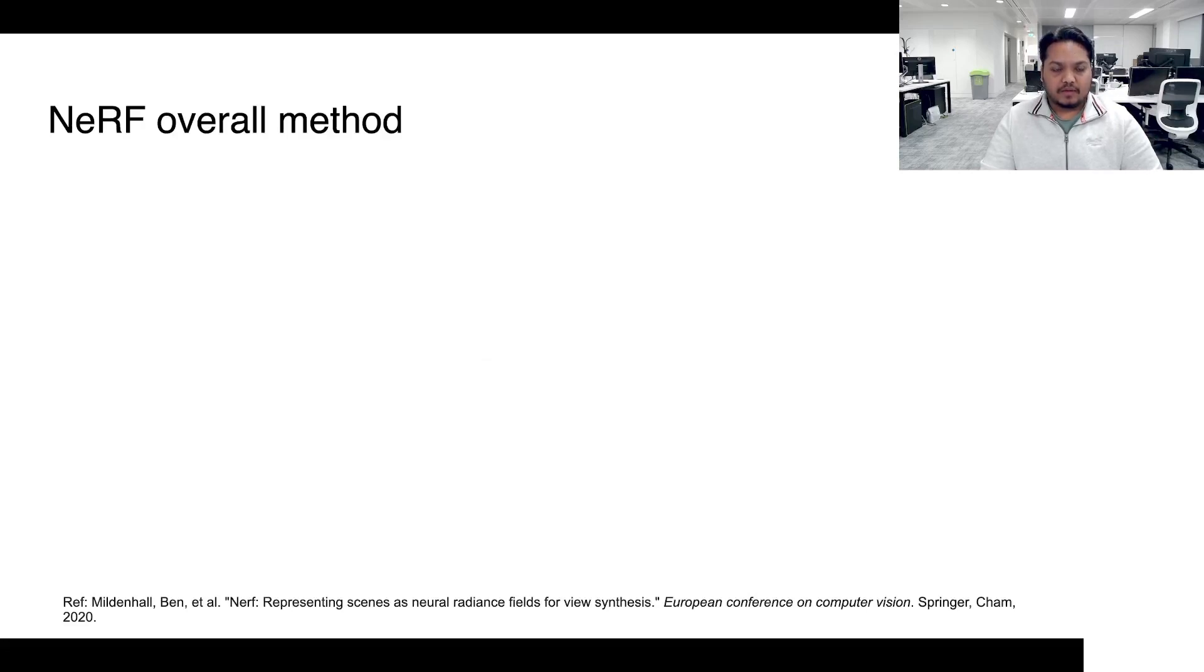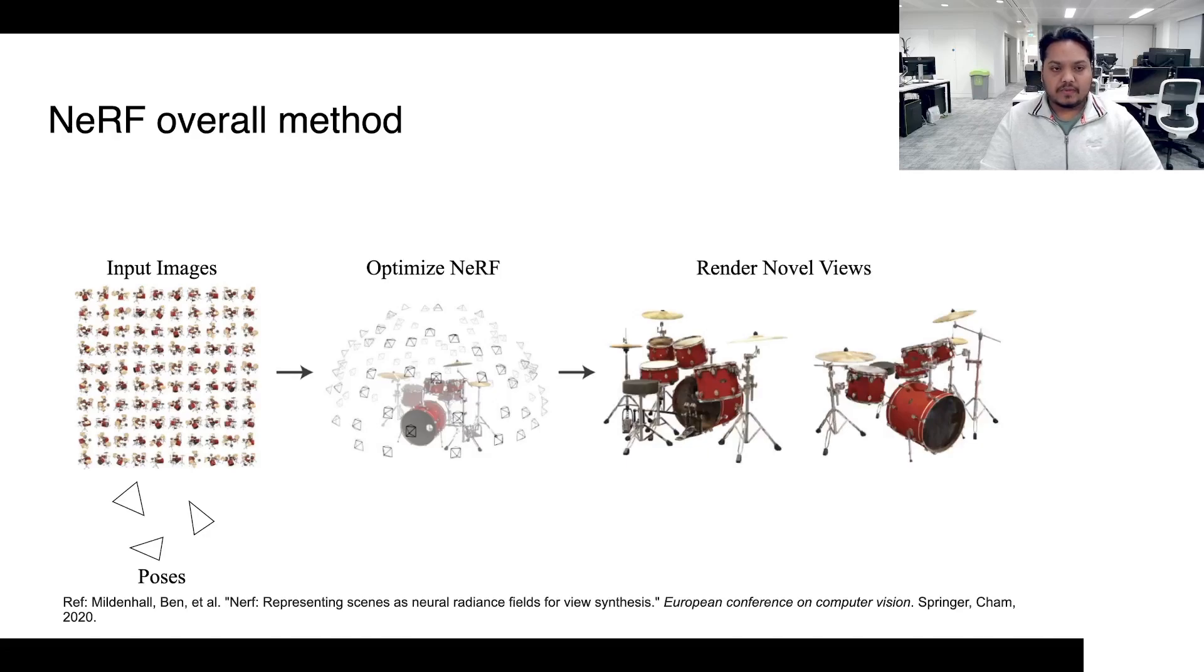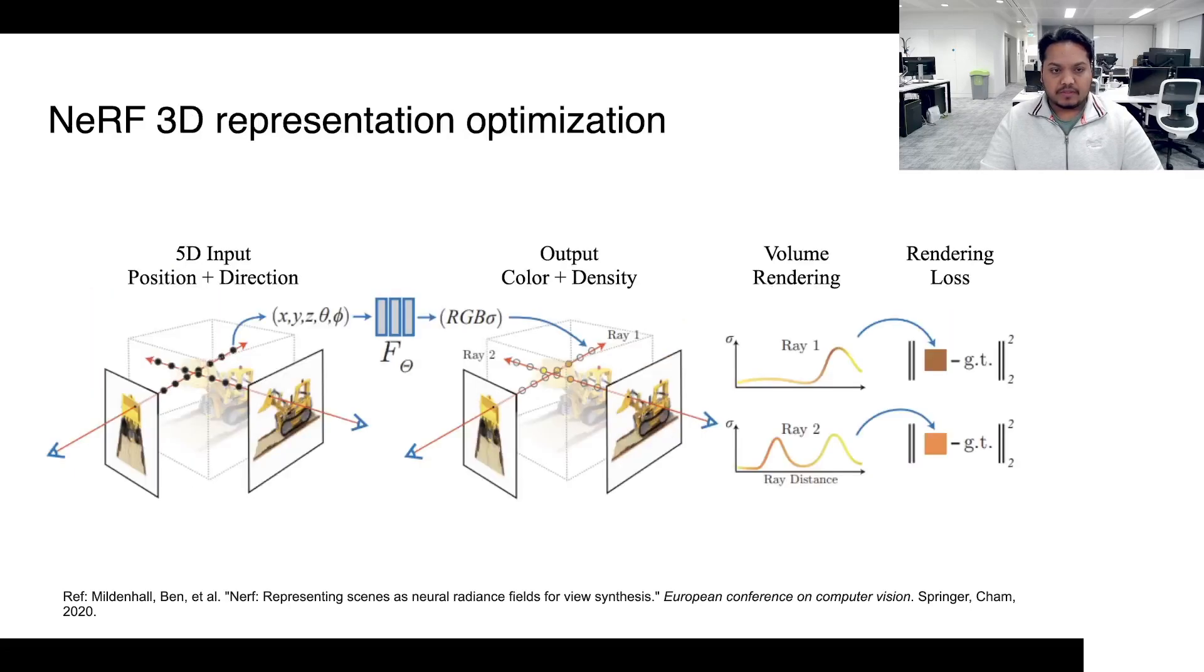The overall high-level pipeline of NeRF can be viewed as follows. It takes as input a bunch of images and their corresponding camera poses, which is then followed by an optimization step to build the underlying 3D scene representation of the input. This 3D scene representation so constructed can then be rendered or viewed from novel camera poses that were not even a part of the input set. Let's dive a bit deeper into how this representation is optimized.